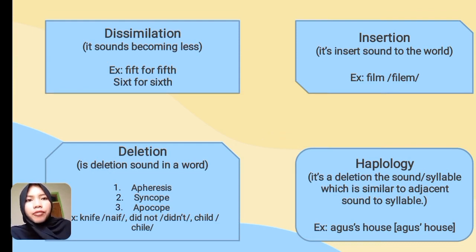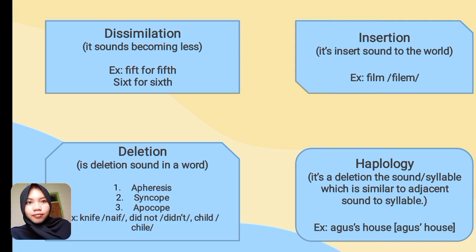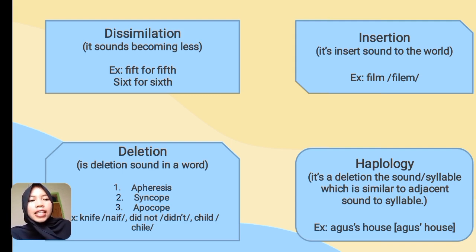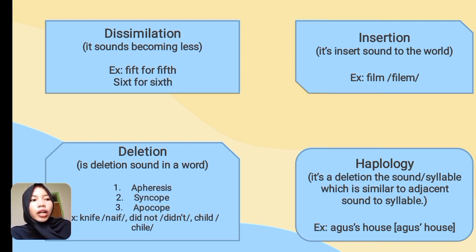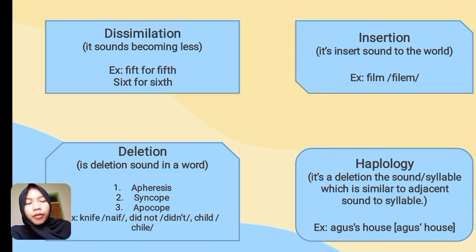An example of dissimilation is 'fifth' for fifth, and 'sixth' for sixth. The next type is insertion. Insertion is when a sound is inserted — the addition of a vowel or consonant between sounds.